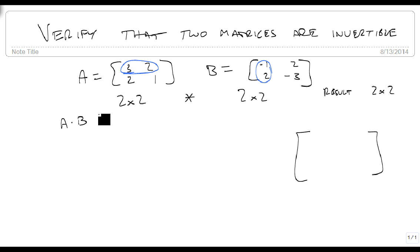So we get 3 times minus 1 plus 2 times 2 minus 3 plus 4 is 1, so we get a 1 right here.